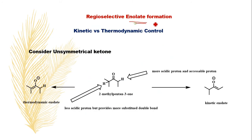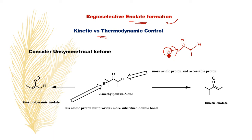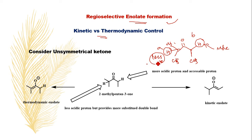The next topic is regioselective enolate formation — kinetic versus thermodynamic control. Consider an unsymmetrical ketone, 2-methylpentan-3-one, which has two different sets of alpha protons. Position A has fewer electron-donating groups and is therefore more acidic. Position B has more methyl groups and is less acidic, but abstracting that proton gives a more substituted enolate.